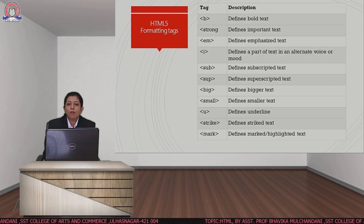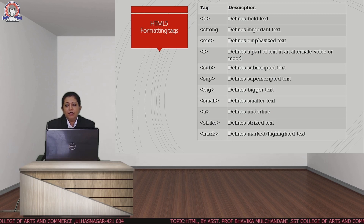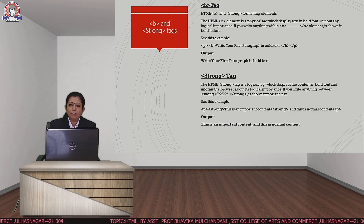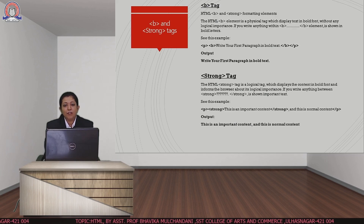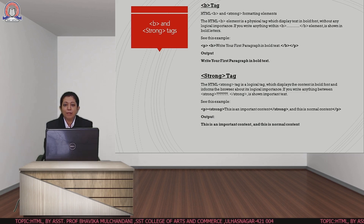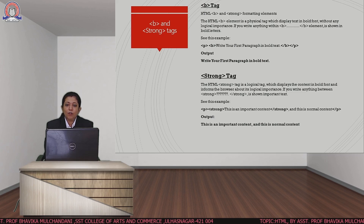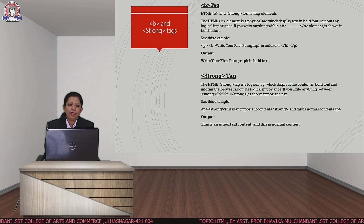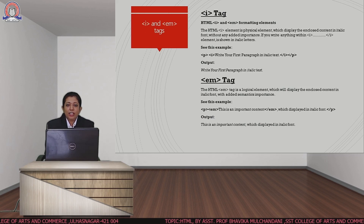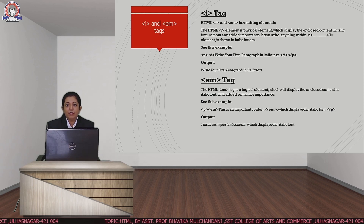Now we will see some of the formatting tags of HTML. There are various formatting tags used to design our web page. The first is the bold tag — if we want to change text to bold, we use the b tag with syntax b and slash b. The strong tag is similar to the b tag and also outputs text in bold, with syntax strong and slash strong. For italics, we use the i tag or the em tag, with syntaxes i and slash i, and em and slash em.